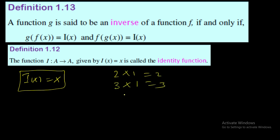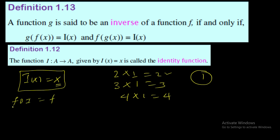The identity function works like multiplying by 1: 2×1 = 2, 3×1 = 3, 4×1 = 4 — the number itself is returned. In multiplication, 1 is the identity. Similarly, in composition, x is the identity function because composing any function f with the identity function returns f itself, from either side.